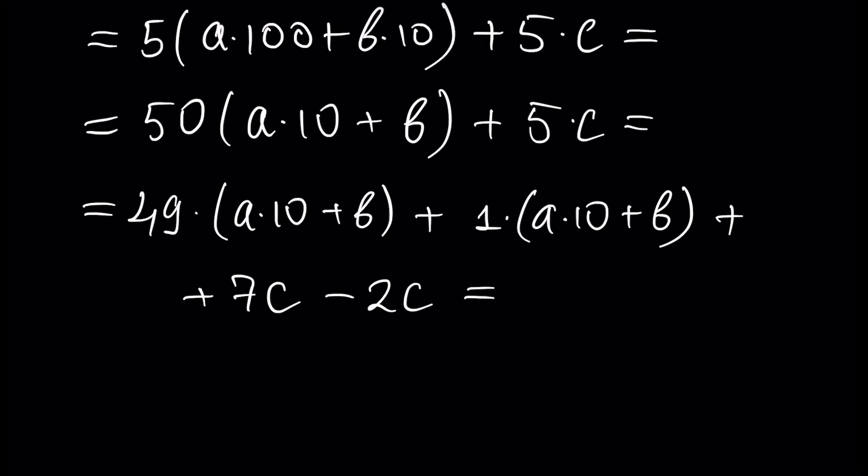If each element of this sum is divisible by 7, then our number is divisible by 7. Obviously, 49 times something is divisible by 7 because 49 is divisible by 7, and 7C is divisible by 7.